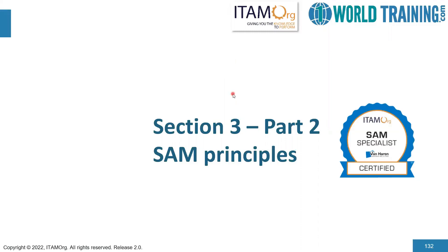We are now in part two of section three, which is about going deeper into the SAM principles. In part one, we covered the ISO standard 19770 for IT asset management. We also looked at the three process tiers and some general items such as processes, critical success factors, KPIs, the importance of change management in an organization, and the concept of policies, particularly from a SAM perspective. In part two, we will continue the journey to learn more about the principles, and we are particularly covering roles in SAM and the business case within SAM.